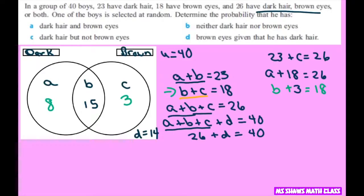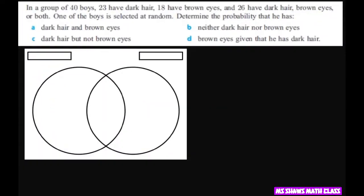Now that we have all this filled out and we have our universal set is 40, we can calculate the probabilities. So let's fill this in again. So dark brown, and then we have A, B, C, and this is going to be 8, 15, 3, D was 14, and our universal set equals 40.